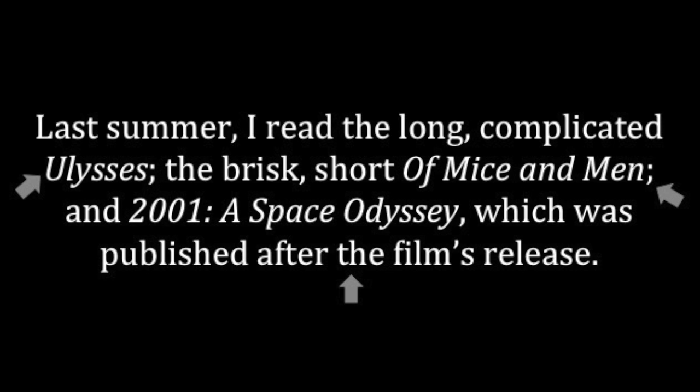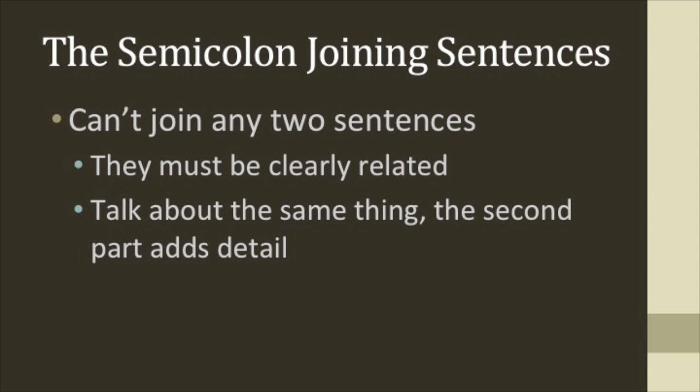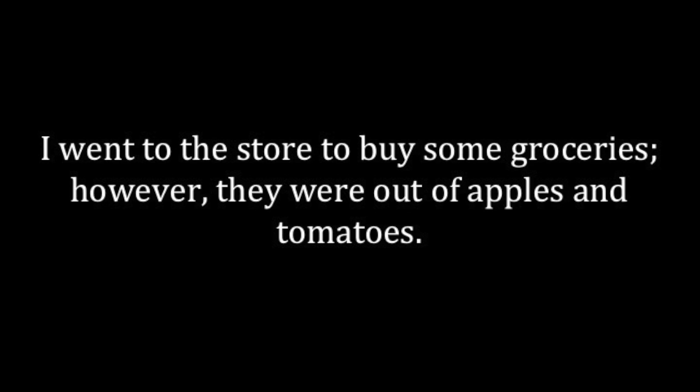Another way that you could use a semicolon is to join two very similar sentences. You can't use a semicolon to connect any two sentences, as the two sentences must be clearly related in ways that warrant a semicolon connecting the ideas. Here's an example: I went to the store to buy some groceries; however, they were out of apples and tomatoes.